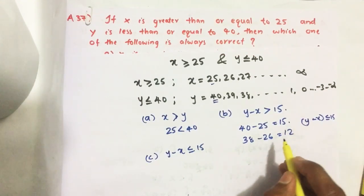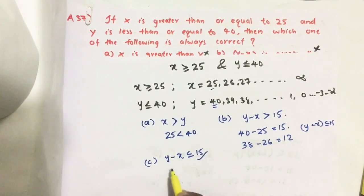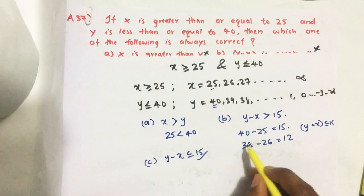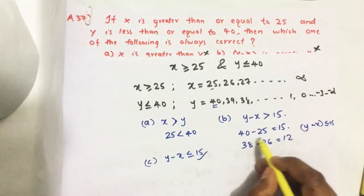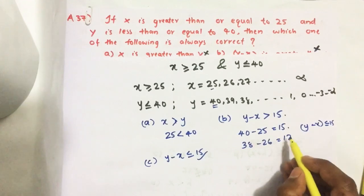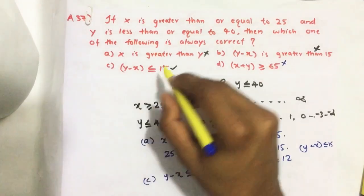Next, option C: Y minus X less than or equal to 15. We already got that from the second option itself. So this is our answer, this is true. Any value we are giving to Y and X, we get the maximum value 15. Any other value we give other than 40 and 25, we get less than 15. So option C is correct, that is our answer.